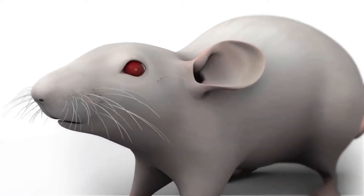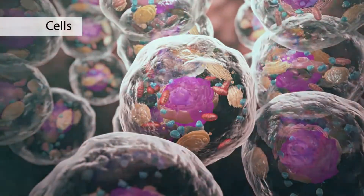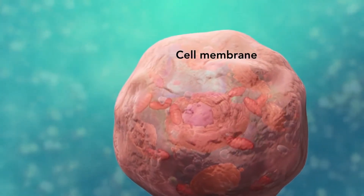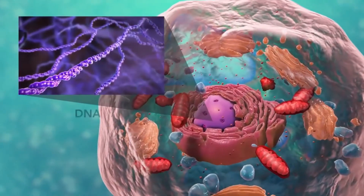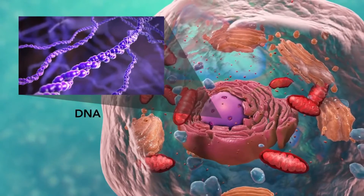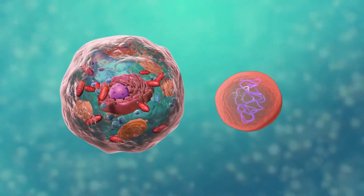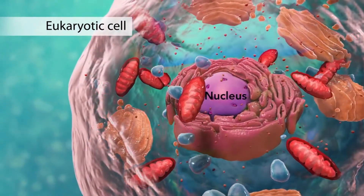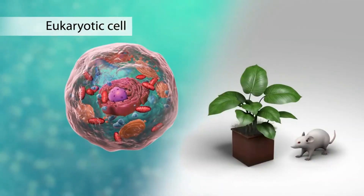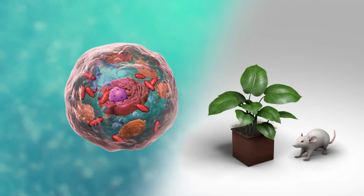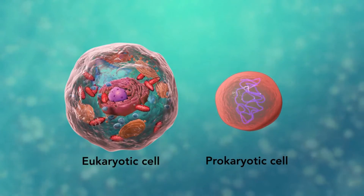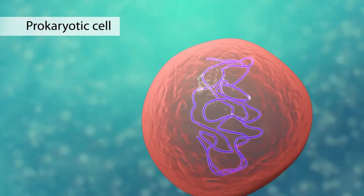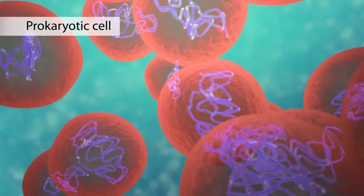Cells are the smallest living units of an organism. All cells have three things in common: a cell membrane, which separates the inside of the cell from its environment; cytoplasm, which is a jelly-like fluid; and DNA, which is the cell's genetic material. There are two broad categories of cells. The first is eukaryotic cells — they have organelles, which include the nucleus and other special parts, and are more advanced, complex cells such as those found in plants and animals. The second category is prokaryotic cells — they don't have a nucleus or membrane-enclosed organelles; they do have genetic material but it's not contained within a nucleus. Prokaryotic cells are always unicellular organisms, such as bacteria.